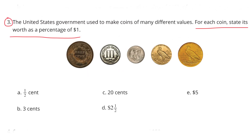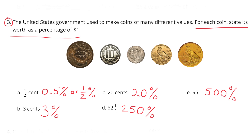Number 3. The United States government used to make coins of many different values. For each coin, state its worth as a percentage of $1.00. A. A half-cent coin could be represented as five-tenths of a percent, or half a percent. B. Three cents would be represented as 3%. C. 20 cents would be represented as 20%.